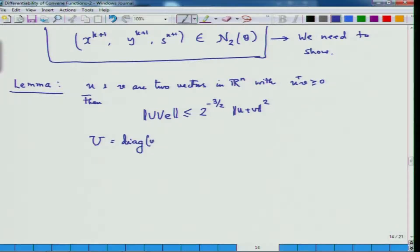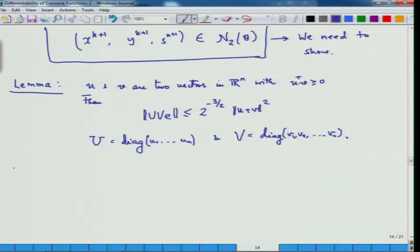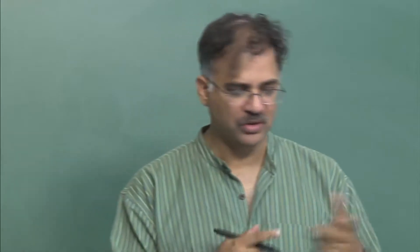As before, U is the diagonal matrix of u and V is the diagonal matrix of v. Now, what we are going to show is the following — another lemma, Lemma A. I am not being very particular about the numbering of lemmas and theorems; the idea is more essential than knowing which is theorem 1 or theorem 2.